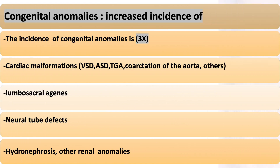Congenital anomalies have an incidence 3 times higher in infants of diabetic mothers. These include cardiac malformations such as VSD, ASD, TGA, and coarctation of the aorta, as well as lumbosacral agenesis, neural tube defects, hydronephrosis, and other renal anomalies.